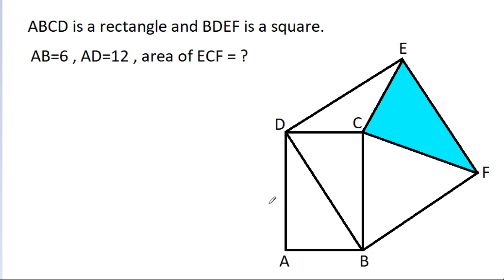In this video, we have given that ABCD is a rectangle and BDEF is a square, and AB is 6, AD is 12. Then we have to find the area of ECF.